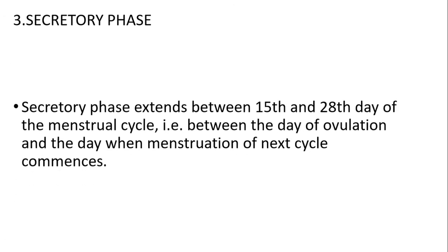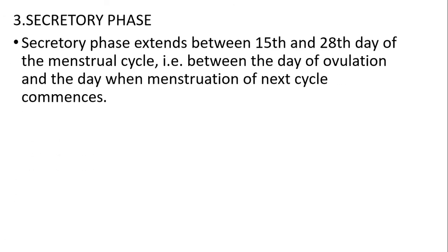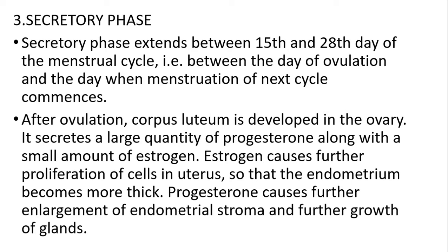The third is the secretory phase. It extends from the 15th to the 28th day of menstruation, that is between the day of ovulation and the day the next cycle commences. After ovulation, the corpus luteum develops in the ovary. It secretes a large quantity of progesterone along with a small amount of estrogen. Estrogen causes further proliferation of cells in the uterus so that the endometrium becomes thicker. Progesterone causes further enlargement of the endometrial stroma and further growth of the glands.